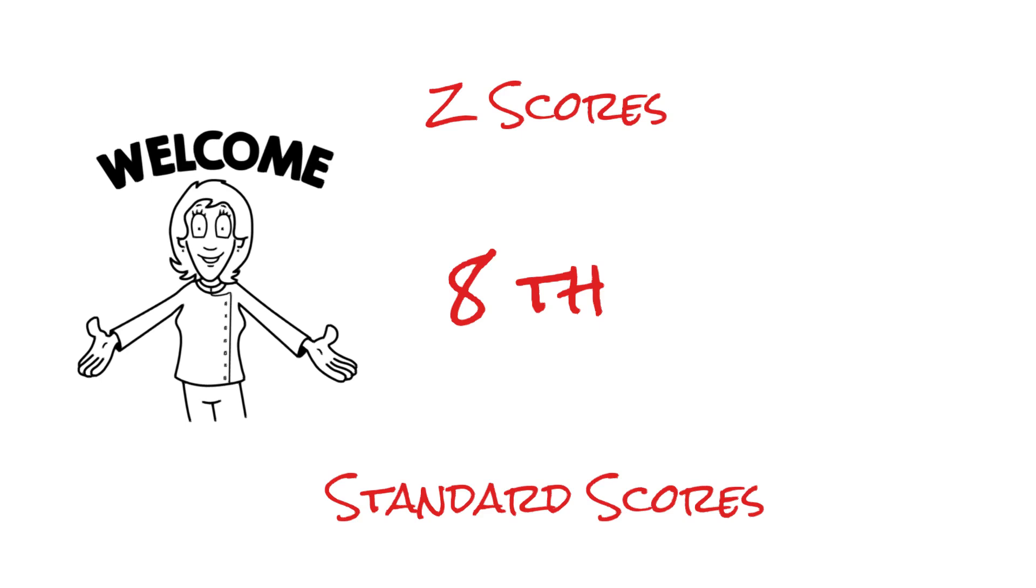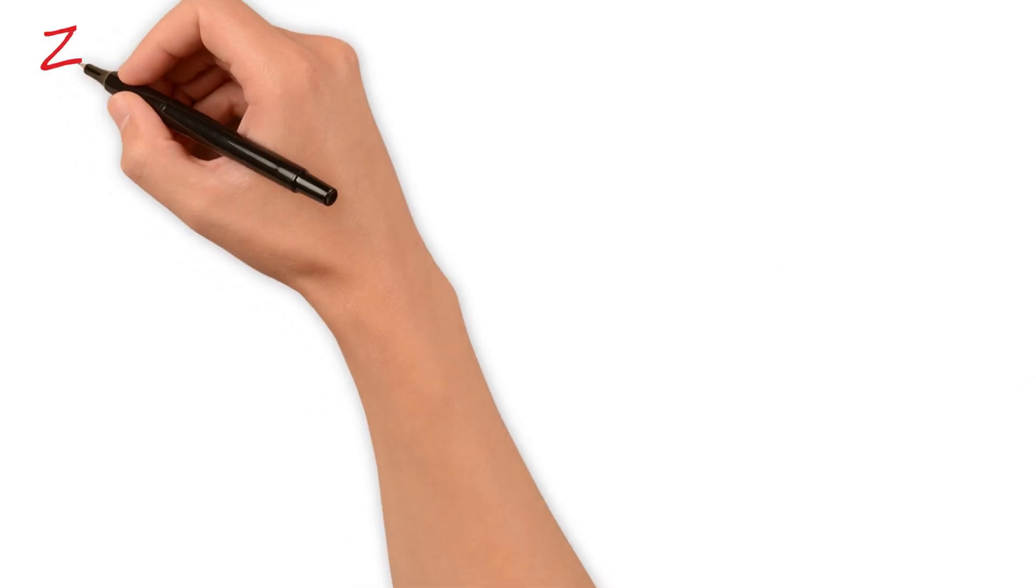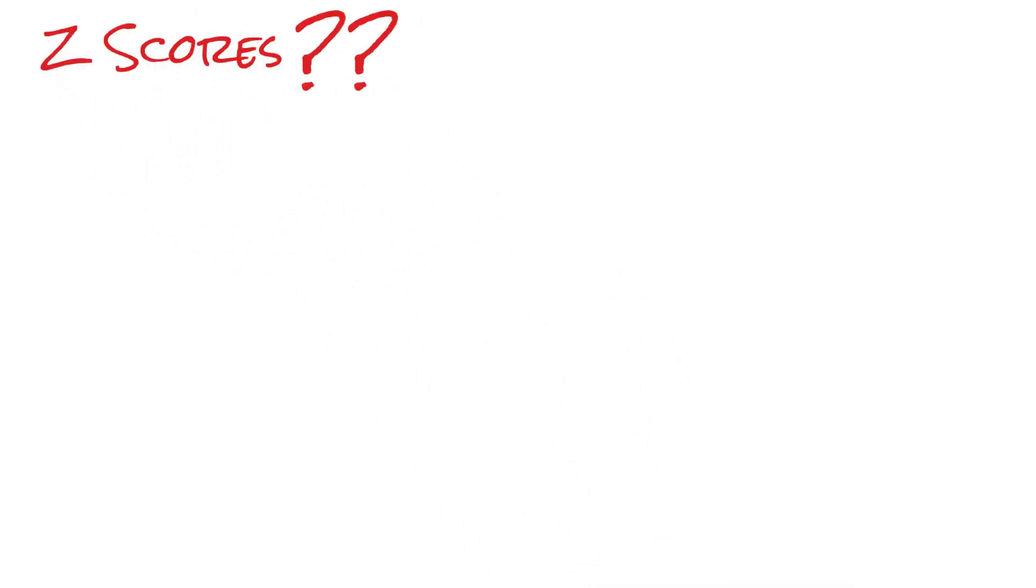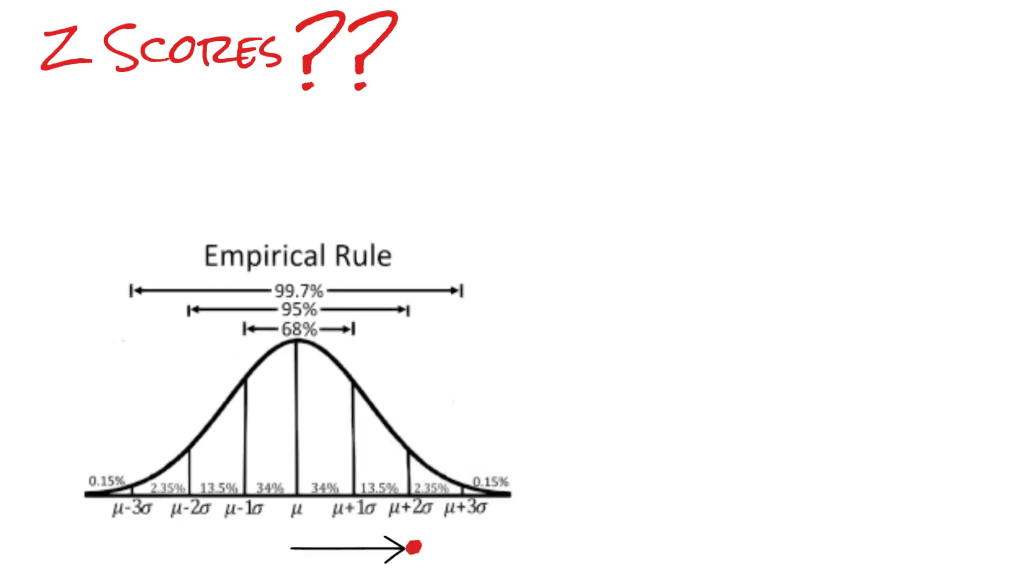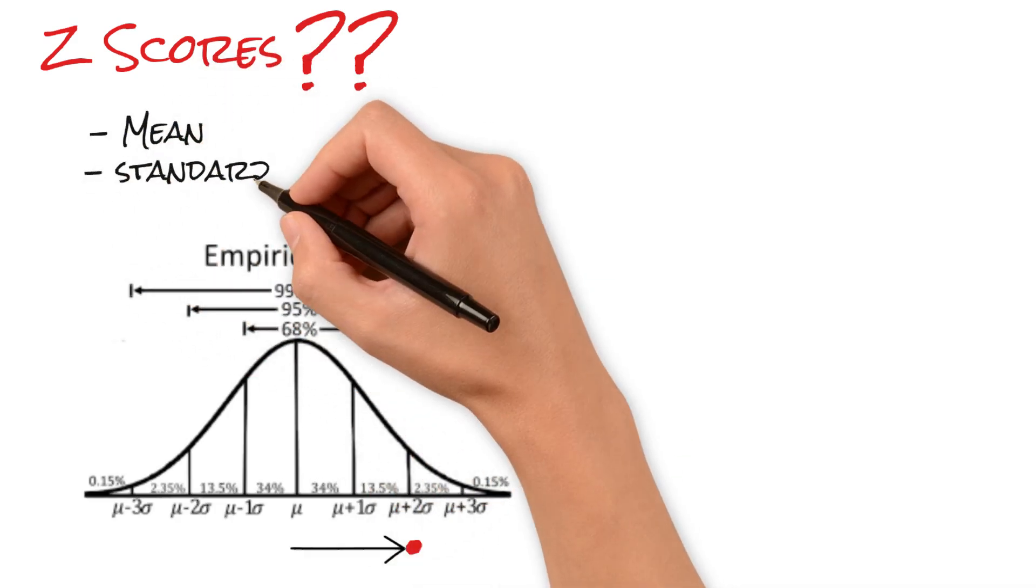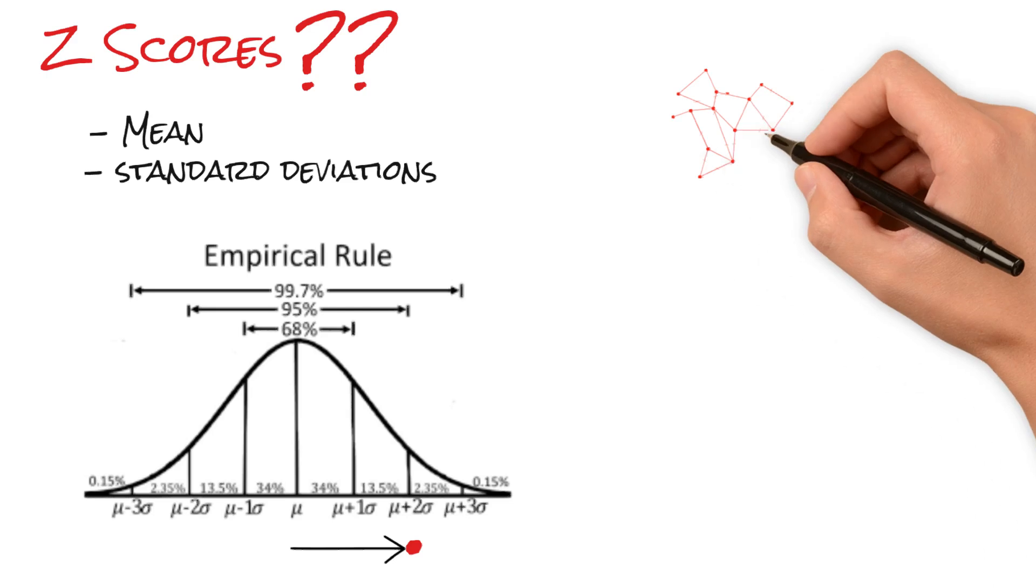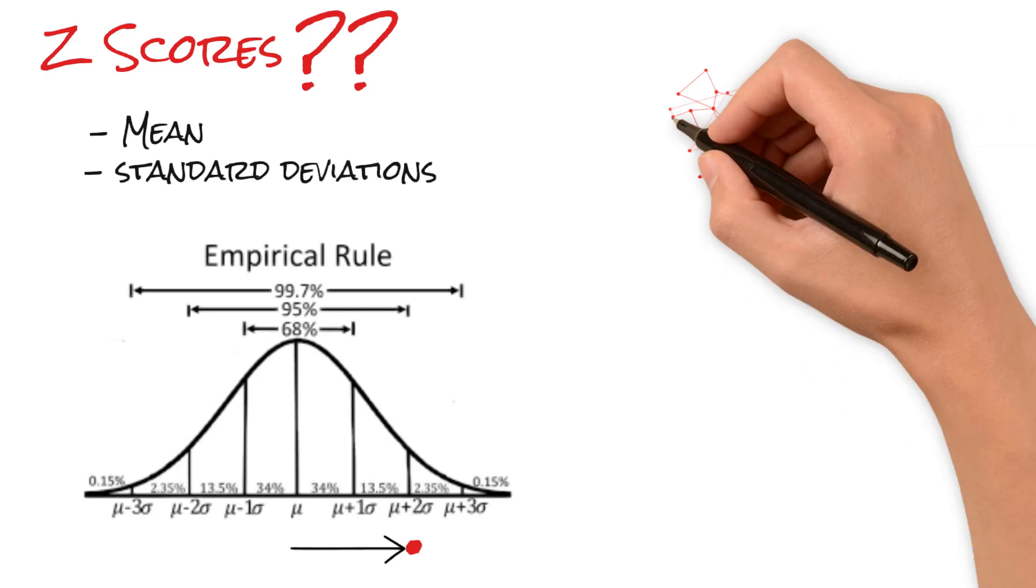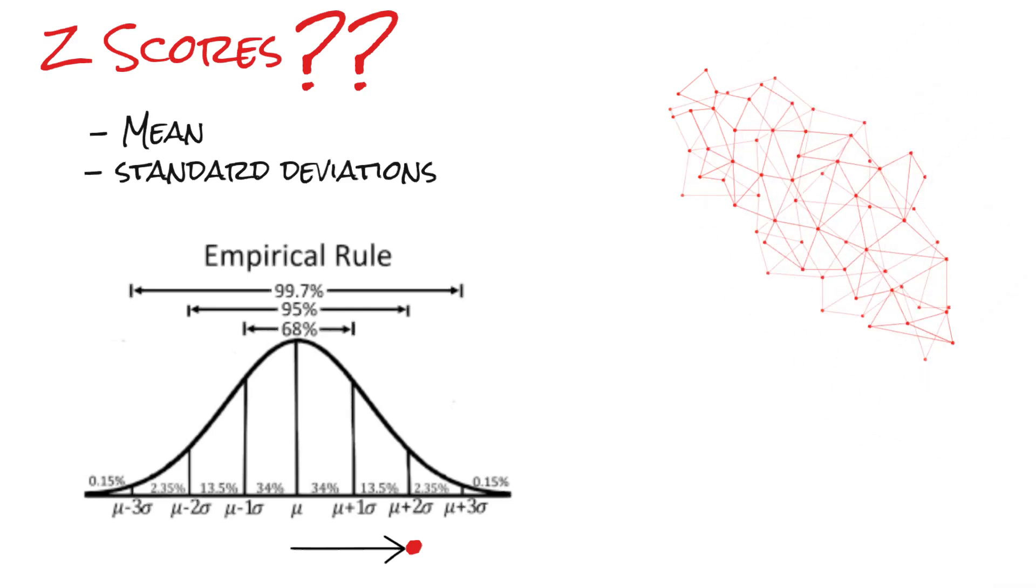This statistical measure is a cornerstone in data analysis, especially when dealing with normal distribution. So what exactly is a Z-score? At its core, a Z-score tells us how far a specific data point is from the mean of a data set, measured in terms of standard deviations. It's a way to understand where a data point stands in relation to the overall data.